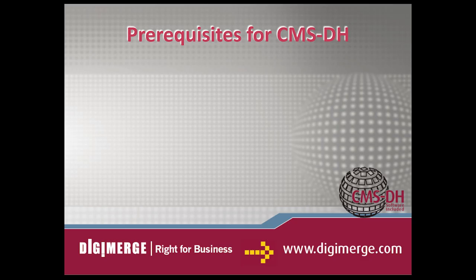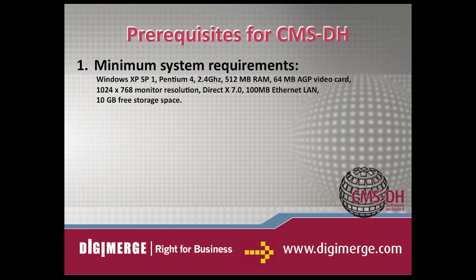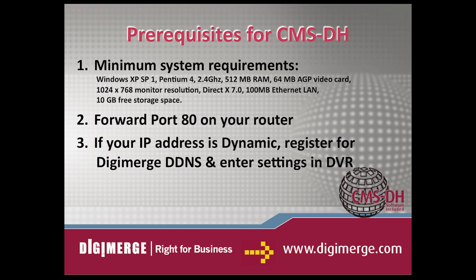CMSDH is utilized on PCs. If you have a Mac system, try using the ISMS Mac software, which is also available. Before installing CMSDH, please note the following prerequisites. Your PC system must meet the minimum requirements. Port 80, or whichever port your system is using, must be port forwarded on your router. If you have a dynamic IP address, you must create a free and secure DigiMerge DDNS account and have the DDNS settings configured in your DVR. Lastly, the DVR must have internet access.